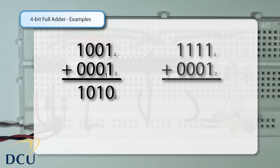If we look at the example on the right hand side of the page, we see we have the number 1111, which is 15 (8 plus 4 plus 2 plus 1) in base 2, which is 15 in decimal, and we want to add to that 1 base 2, which is 1 in decimal. So we perform the same set of operations: 1 plus 1 gives us 0 with a carry of 1.